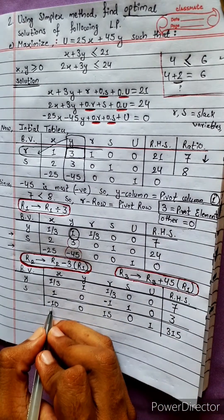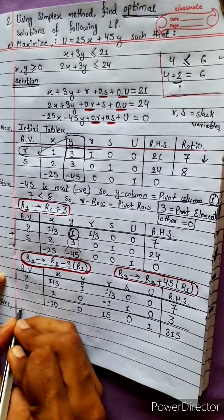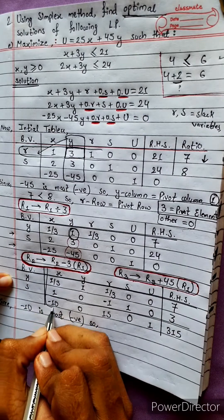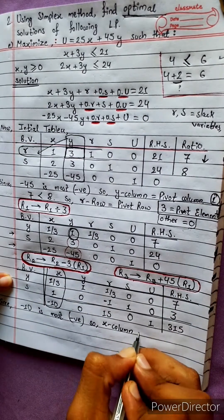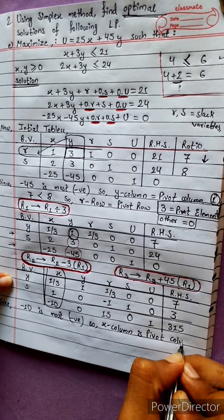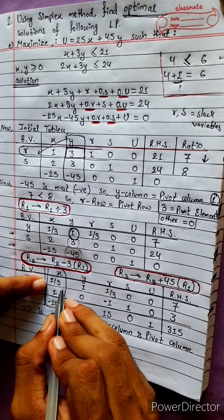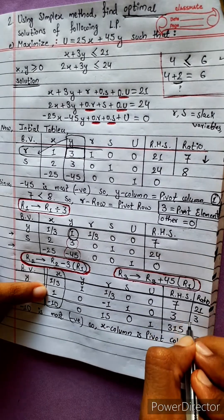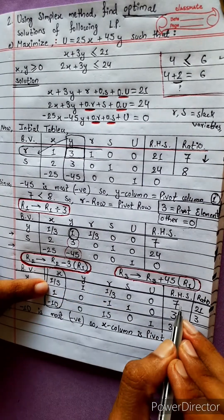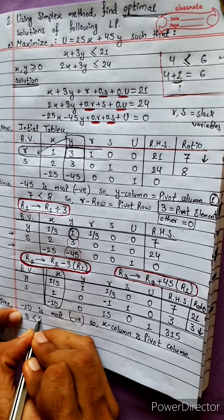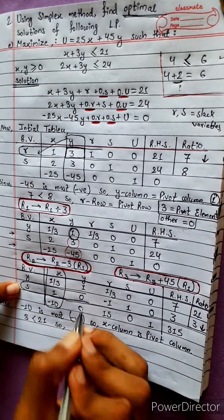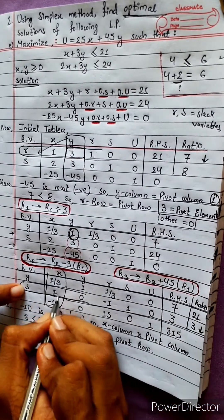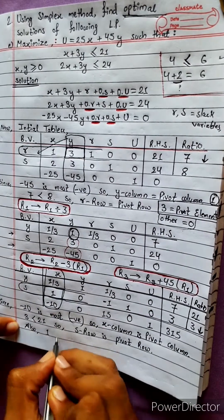Now we check for optimality again. Minus 10 is the most negative value, so the x-column is the new pivot column. Computing the ratio test: 7 divided by (1/3) = 21, and 3 divided by 1 = 3. Since 3 is less than 21, the pivot element is 1 in row 2.